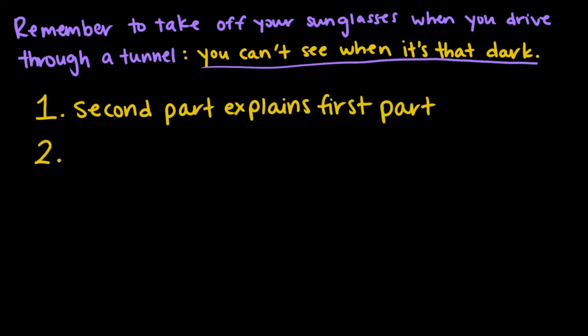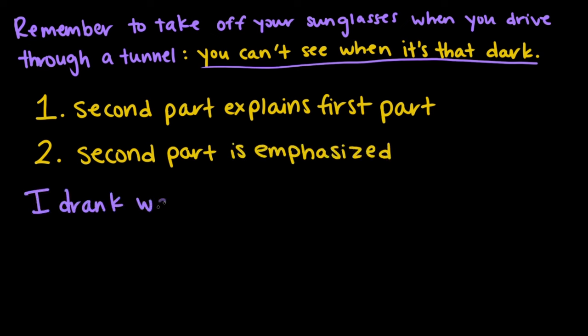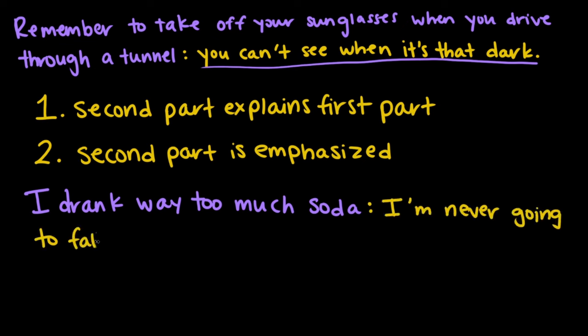The other case is when the second part of the sentence is emphasized. Something like: I drank way too much soda — I'm never going to fall asleep. These are two independent clauses that could be their own sentences, but they're closely related enough that it makes sense to have them connected as one. So the colon links them together, and the second part is emphasized — that's the focus of the sentence: I'm never going to fall asleep. The colon can connect two parts that can stand alone as their own sentences, whether it's two independent clauses or an independent clause technically connected to a dependent clause.